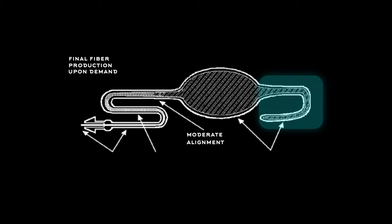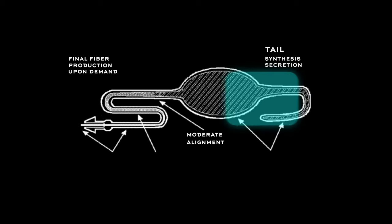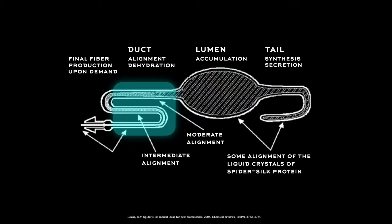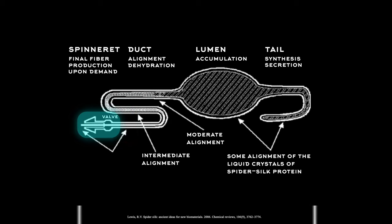The spider silk begins as a liquid aqueous solution of the peptide chain called dope, which is secreted in the tail of its silk gland, and is then accumulated in the lumen of the gland. The protein is then pulled through a narrow duct towards the spinneret, where a muscular valve controls the flow rate and diameter of the fiber.